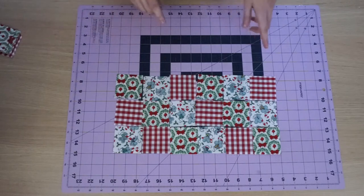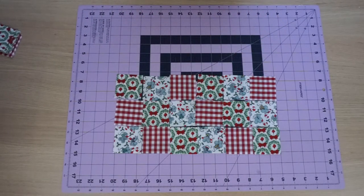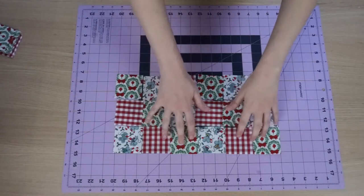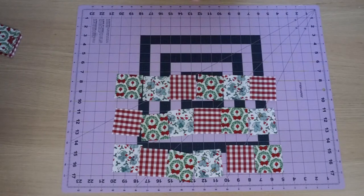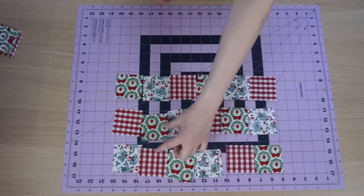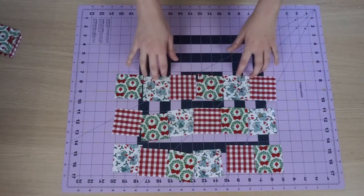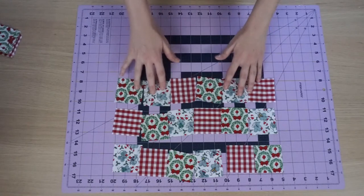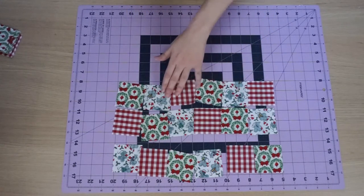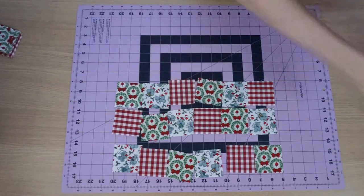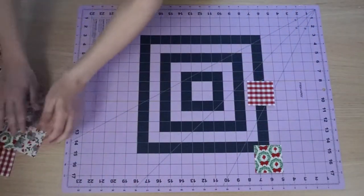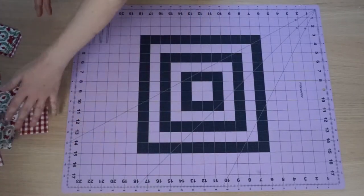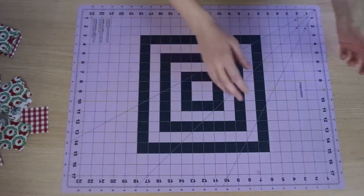Alright, so once that is complete, you can go ahead and sew your rows together using a quarter inch seam allowance. So you're going to sew this row together, and then you'll sew this one, and then once those two are done, you'll sew these two together, then you can sew this row together, and then connect this one to that one. So I've already done that, so let me show you what mine looks like. Oh, and you'll need to do that for two squares.